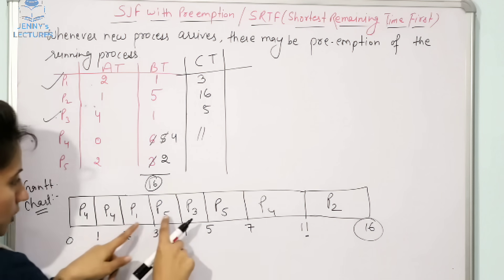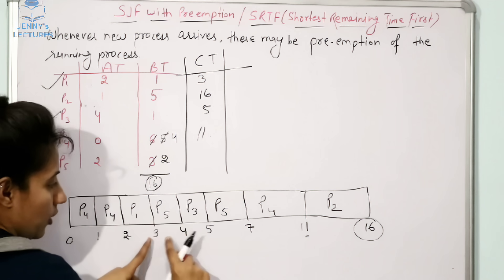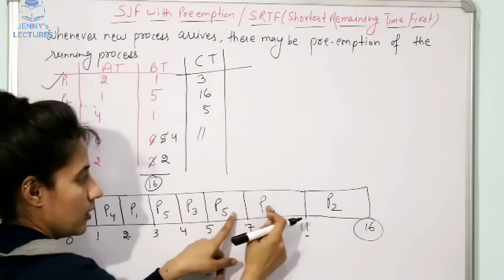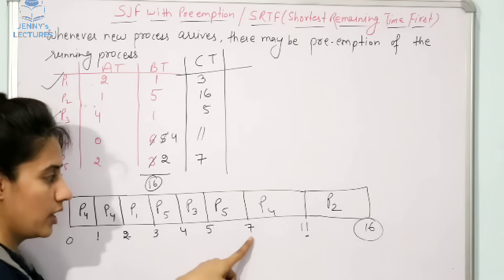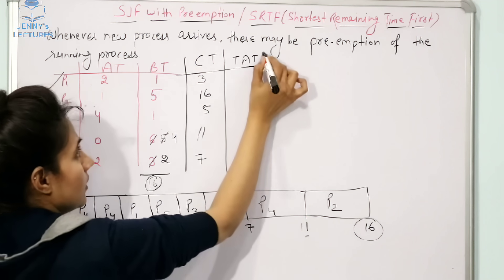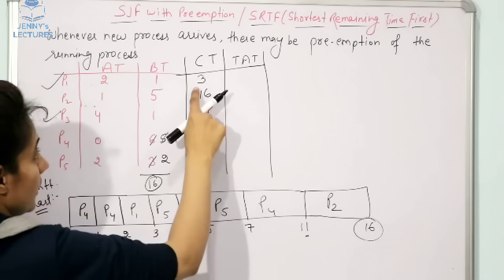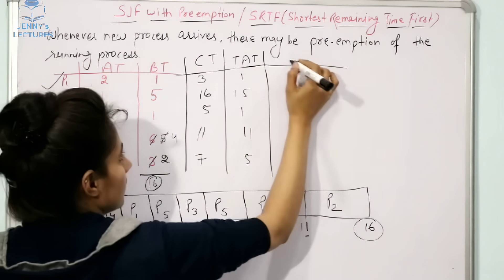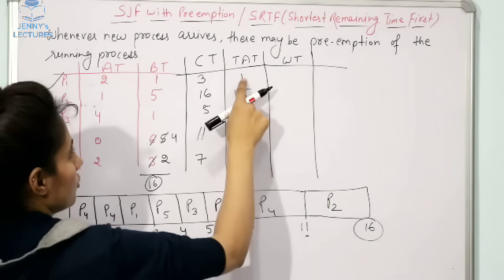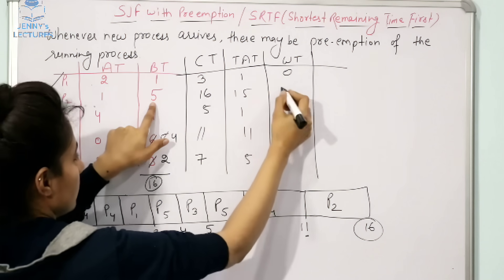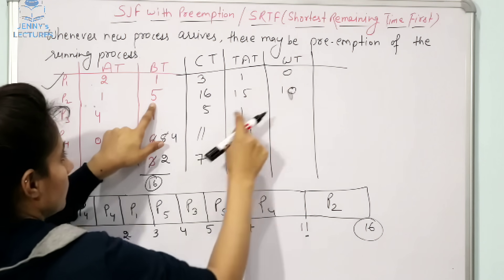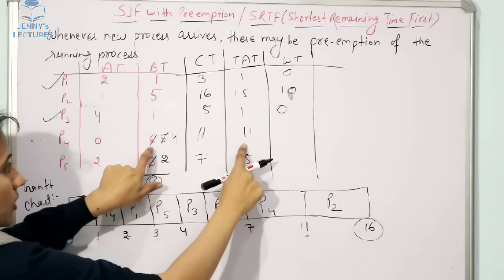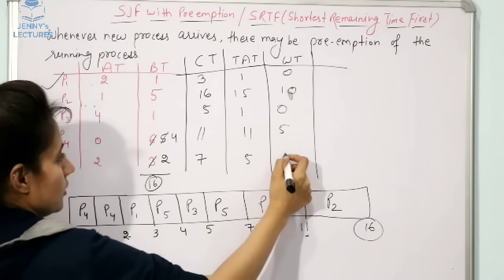P5 first appears from three to four, but CPU is allocated to P5 again later; the last P5 block ends at seven, so completion time of P5 is seven. Turnaround time = completion time minus arrival time: P1: 3−2=1, P2: 16−1=15, P3: 5−4=1, P4: 11−0=11, P5: 7−2=5. Waiting time = turnaround time minus burst time: P1: 1−1=0, P2: 15−5=10, P3: 1−1=0, P4: 11−6=5, P5: 5−3=2.